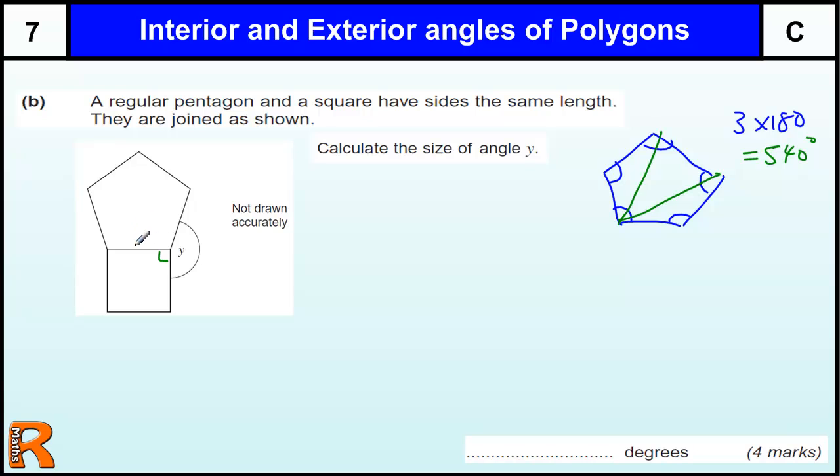In this pentagon, the regular pentagon, we've got 540 divided by 5, which is 108 degrees for each angle.